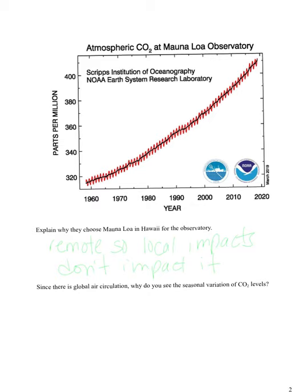Looking at the graph, you'll notice there is a kind of variation — it does this up-down, up-down, up-down pattern. So why do we see this up-down variation? The prompt tells us: it's seasonal variation. That up-down nature of the graph represents seasonal variation.